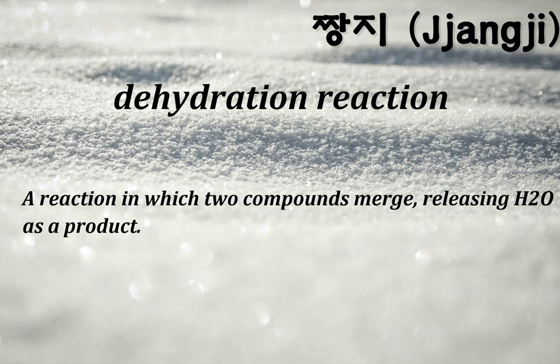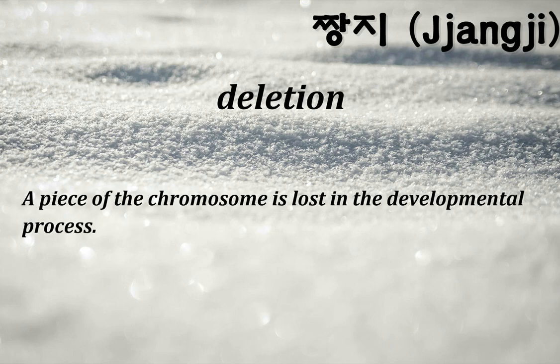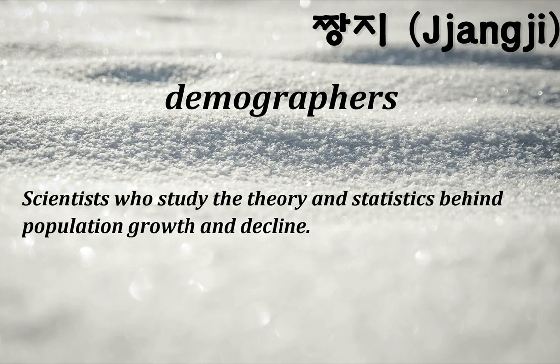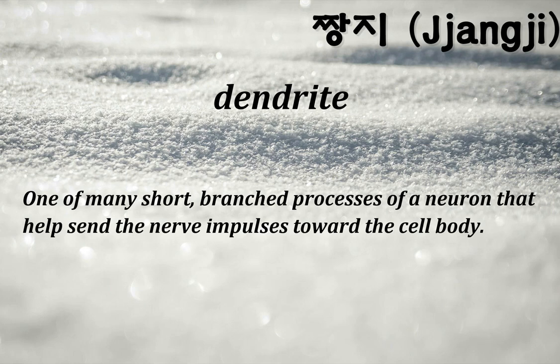Dehydration reaction: a reaction in which two compounds merge, releasing H2O as a product. Deletion: a piece of the chromosome is lost in the developmental process. Demographers: scientists who study the theory and statistics behind population growth and decline. Dendrite: one of many short, branched processes of a neuron that help send nerve impulses toward the cell body.